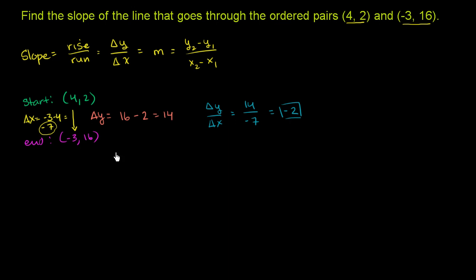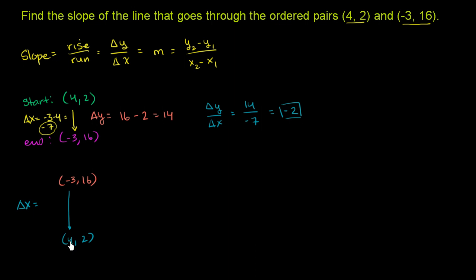Now I want to show you that we could have done it the other way around — making negative 3 comma 16 the starting point and 4 comma 2 the endpoint. We would get the negative values of each, but they cancel out and we still get negative 2. So let's say our start point is negative 3 comma 16 and our endpoint is 4 comma 2. Our change in x: starting at negative 3 and going to 4, we went up 7, or 4 minus negative 3.